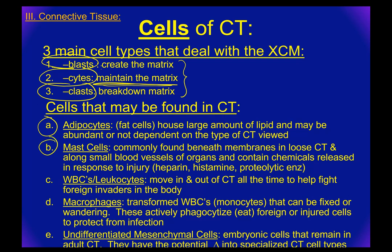Mast cells are usually found beneath membranes and in loose connective tissue along small blood vessels. They contain chemicals that, when there's an injury, they release almost like a red flag saying there's injury here. Since you never know where you'll be injured, you need these everywhere. White blood cells, or leukocytes — leuco means white, cytes means cells — move in and out of connective tissue constantly, literally looking for something to fight, so they have to be mobile.